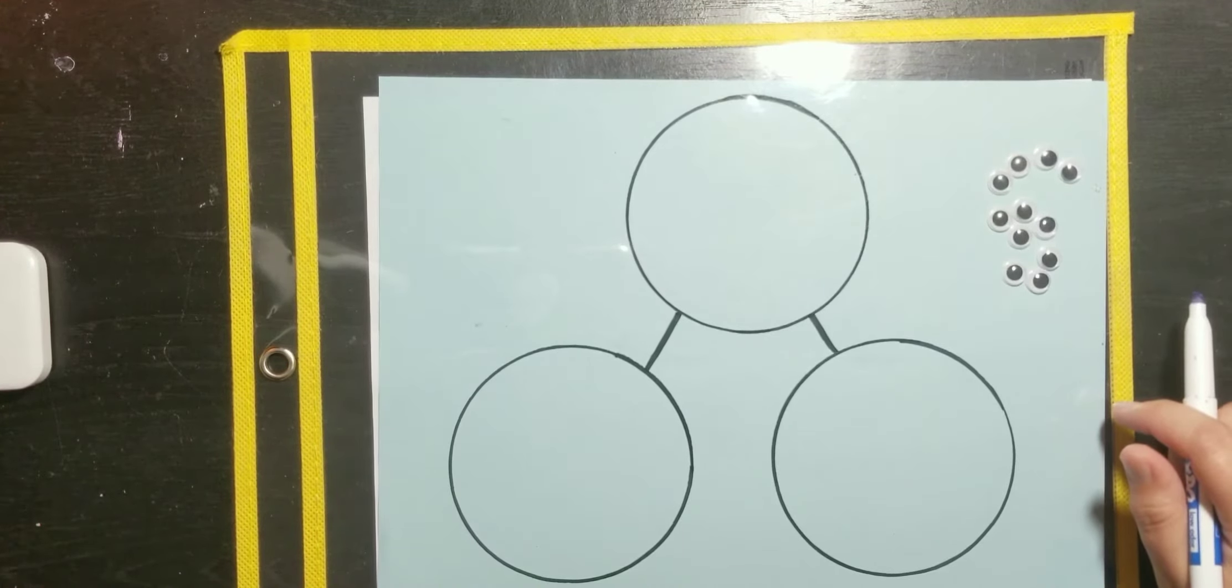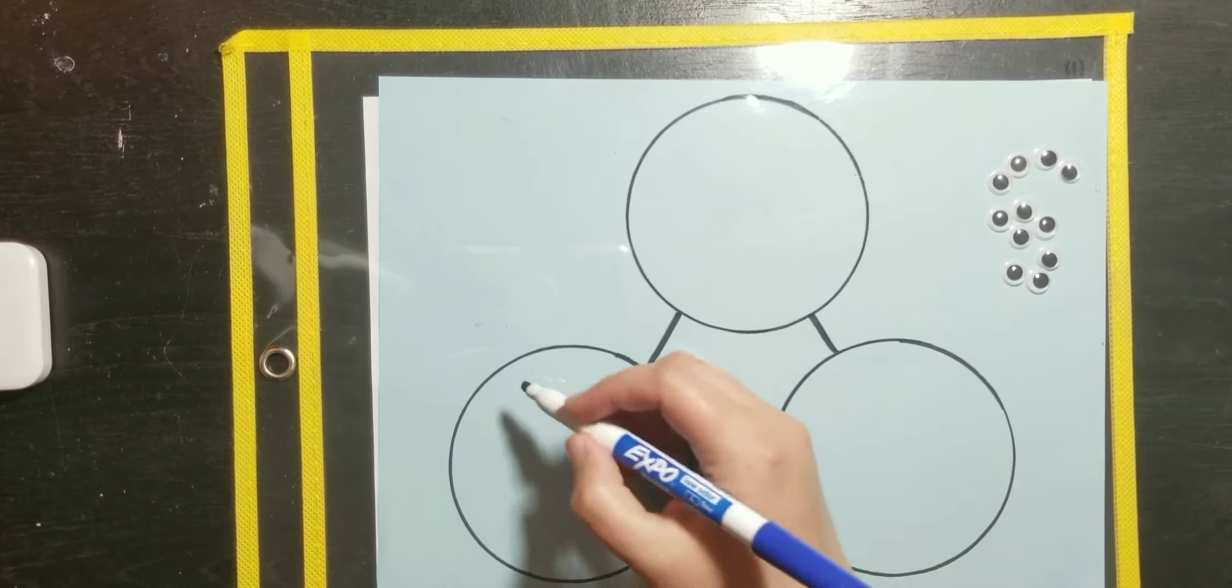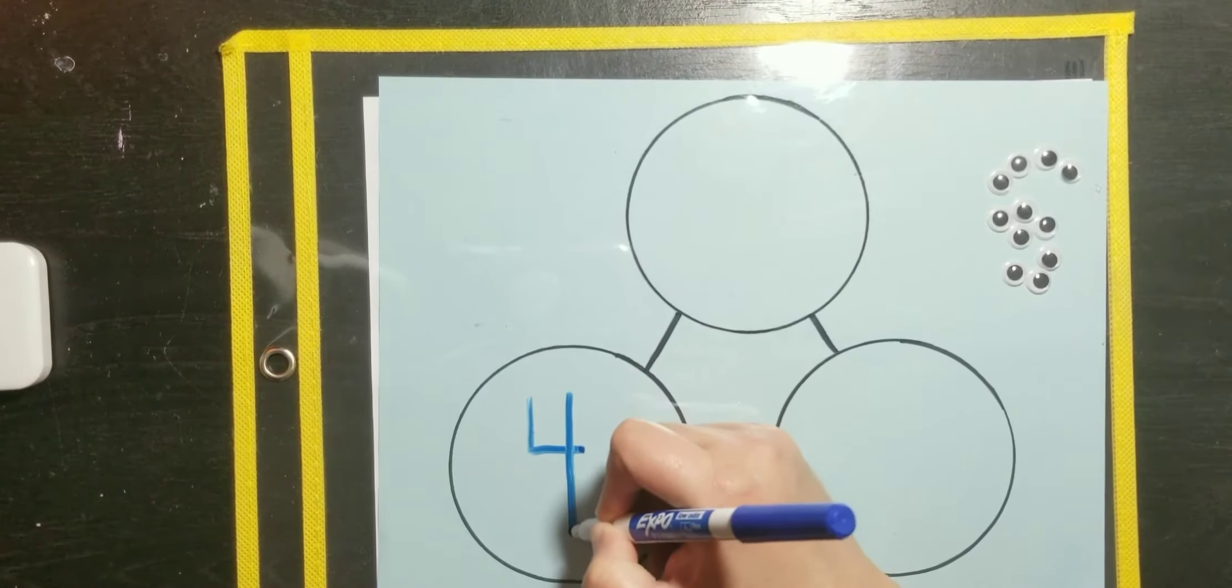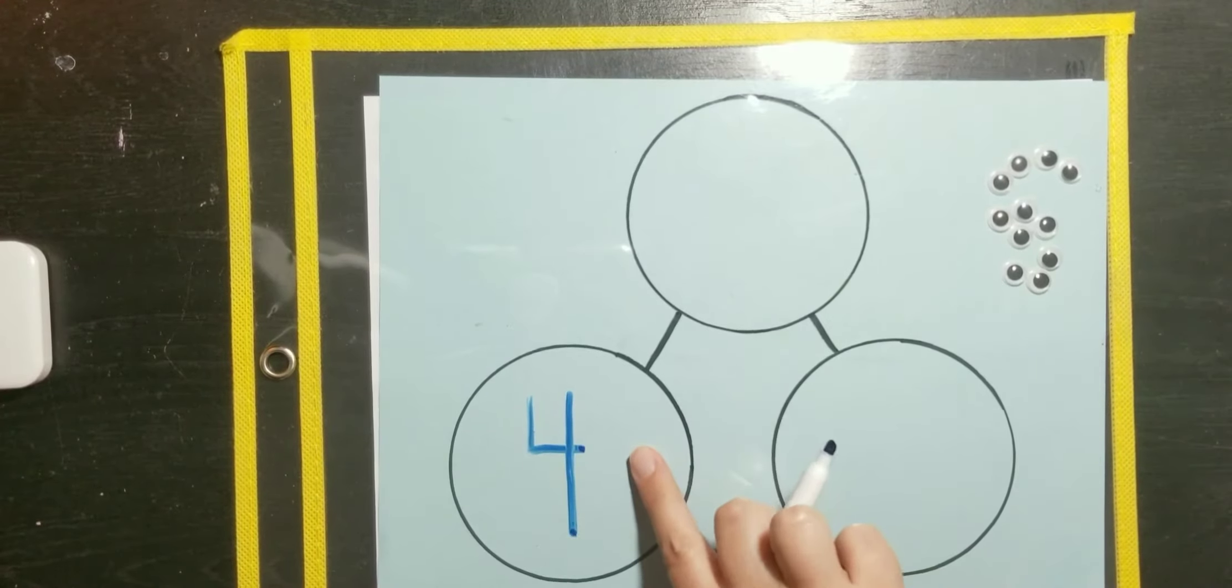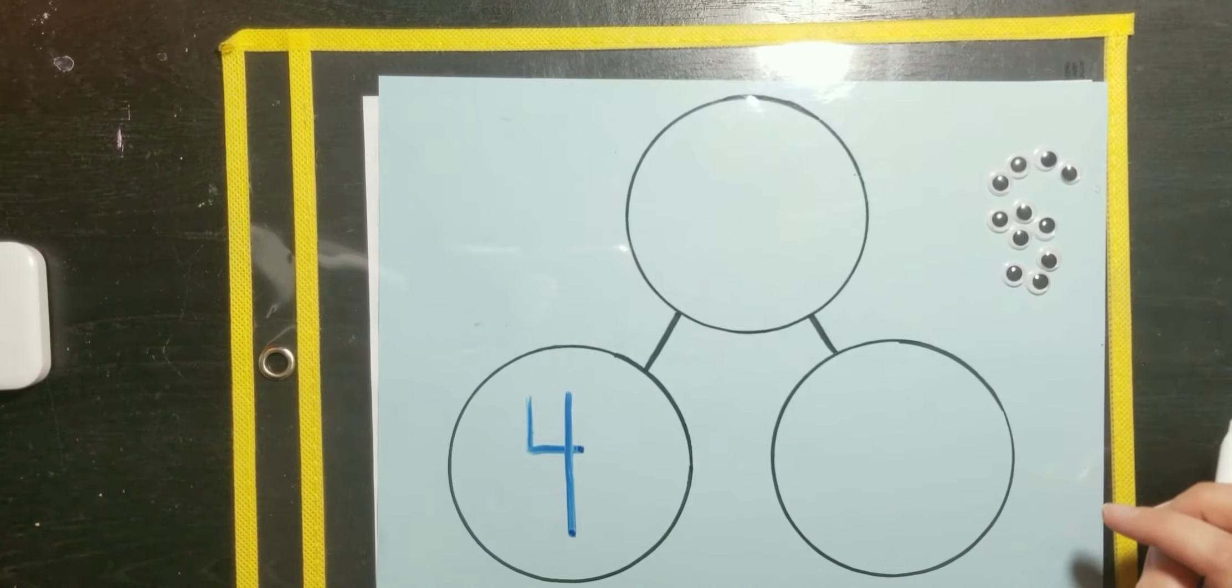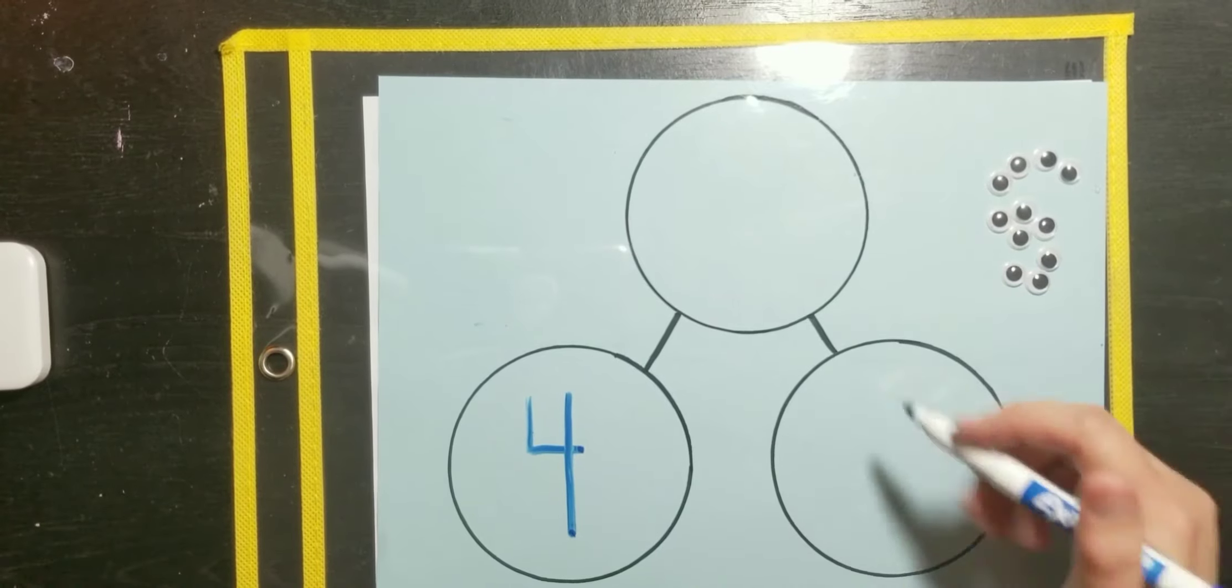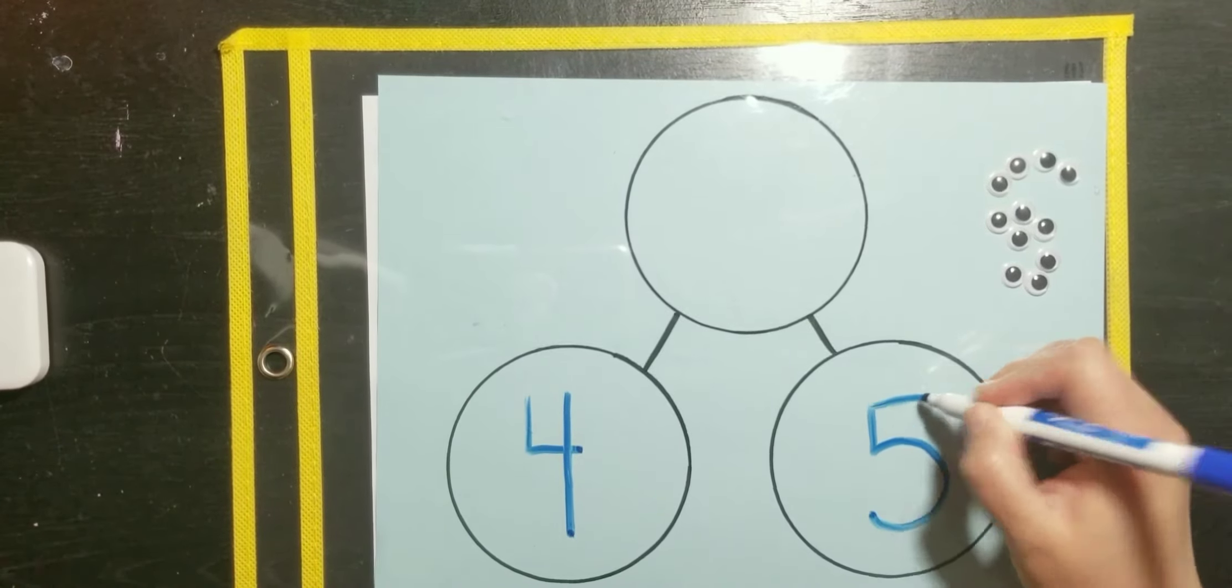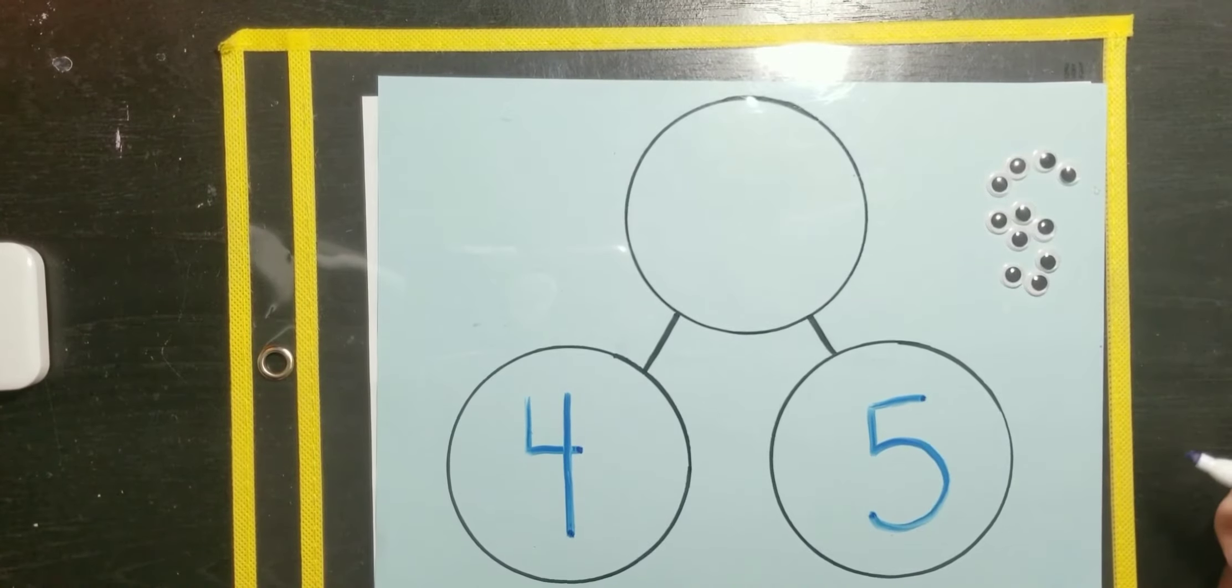Alright, let's listen to that problem again. So, first I said that Adelie has four sunflowers. So, that's one of our parts and we're trying to figure out what the whole is. So, since four is one of our parts, I'm going to put it here in one of the part circles. Then the story says that Gabby has five sunflowers. That's our other part. So, I will put the five here to show Gabby's sunflowers.